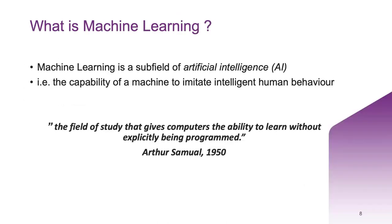What exactly is machine learning? Machine learning is a subfield of artificial intelligence that allows software applications to become more accurate at predicting outcomes without being explicitly programmed to do so. In layman's terms, this is the capability of a machine to imitate intelligent human behaviour. Typically, artificial intelligence and machine learning are seen as synonymous, because most of the current advances in AI involve some sort of machine learning. It was defined in the 1950s by an AI pioneer named Arthur Samuel.